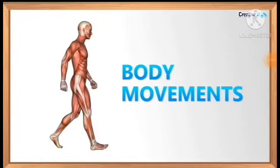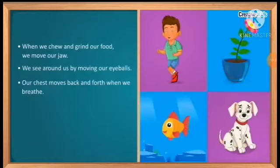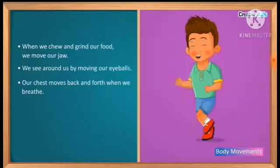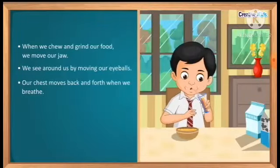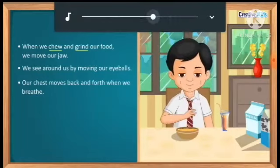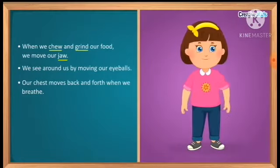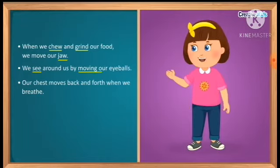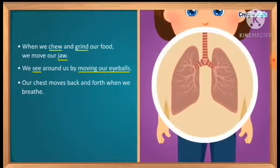We will also discuss movement in other animals. We see different types of movement in our everyday life. If we want to eat food, we put food in our mouth and chew and grind it. If we want to see our surrounding area, we move our eyeballs. During respiration, our heart also does a back-and-forth movement. So there are many types of movements in our body parts every day — we chew and grind our food, we move our jaw, we see around us by moving eyeballs.